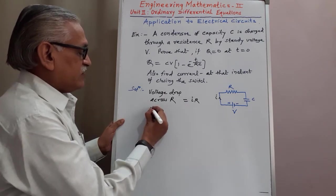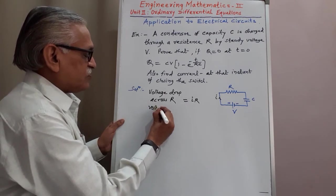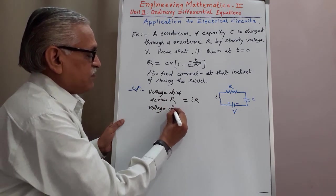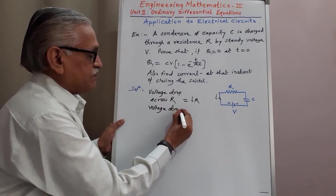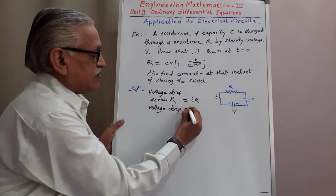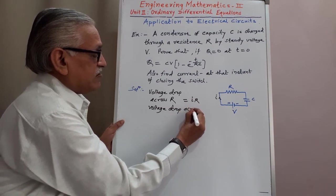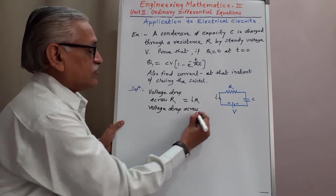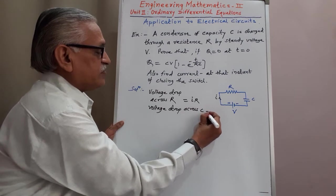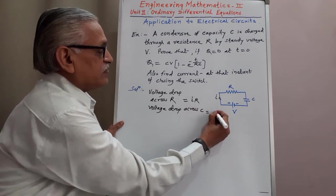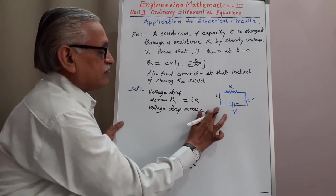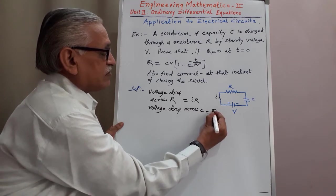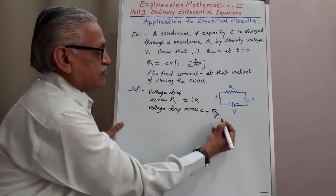The voltage drop across condenser C is Q by C.